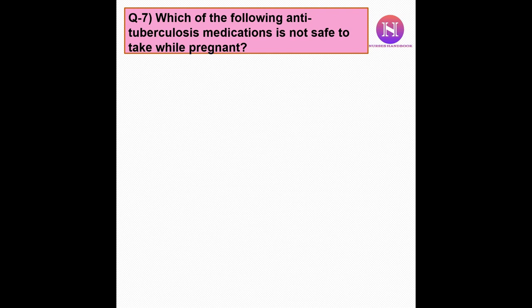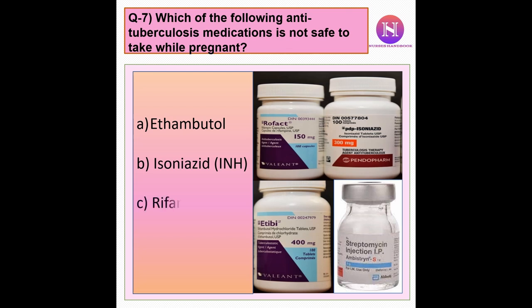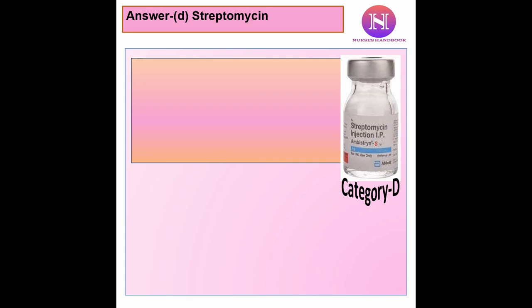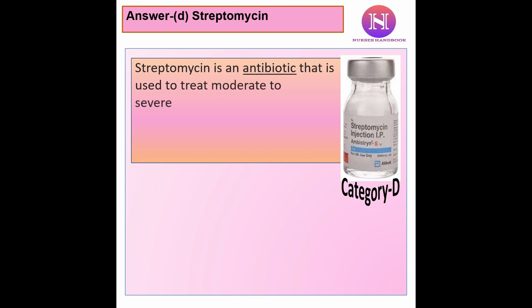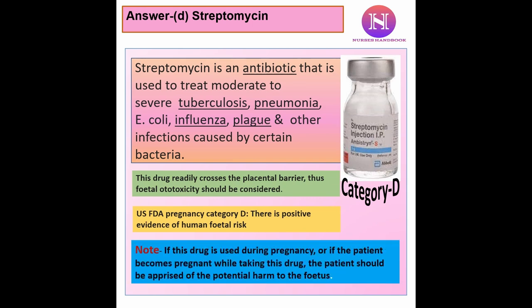Question 7: Which of the following anti-tuberculosis medications is not safe to take while pregnant? a. Ethambutol. b. Isoniazid. c. Rifampicin. d. Streptomycin. The correct answer is d — streptomycin. It is an antibiotic used to treat moderate to severe tuberculosis, pneumonia, E. coli, influenza, and plague. This drug falls in category D, readily crosses the placental barrier, and may cause fetal ototoxicity. Patients should be informed of the potential harm to the fetus if taken during pregnancy.